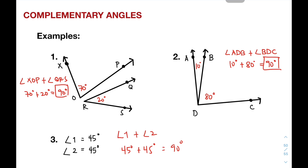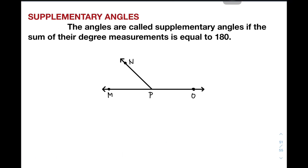In the next part of our video, I will show you the next type of angles for this tutorial, which is supplementary angles. We discussed earlier that complementary angles are two angles with a sum of measurements equal to 90 degrees. This time, angles are called supplementary angles if the sum of their degree measurements is equal to 180 degrees.